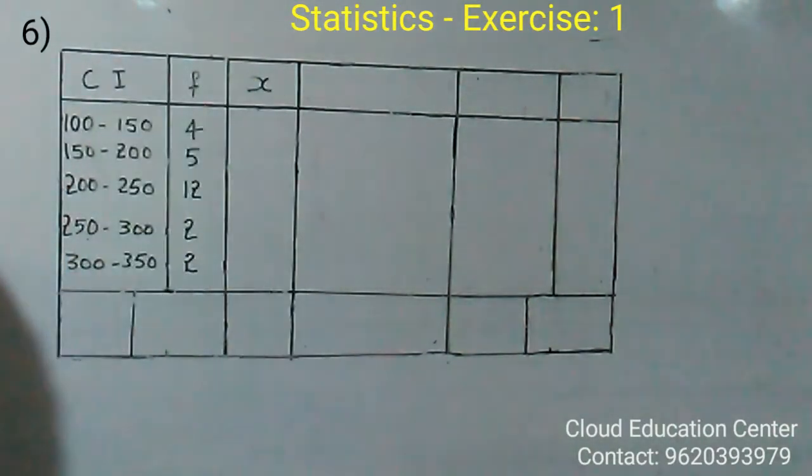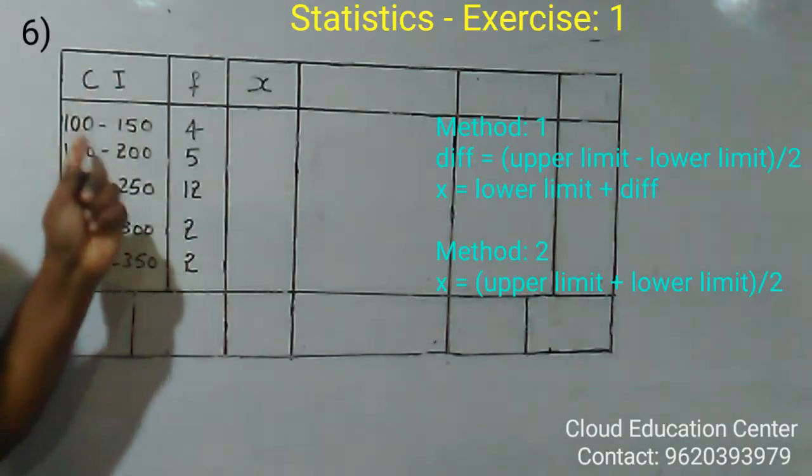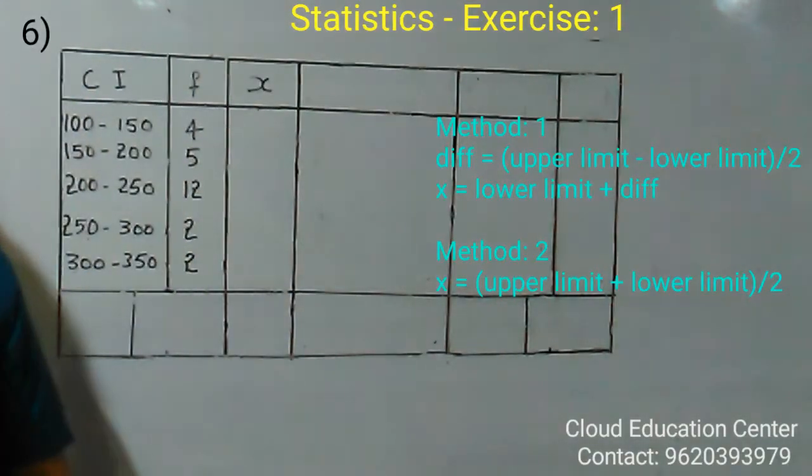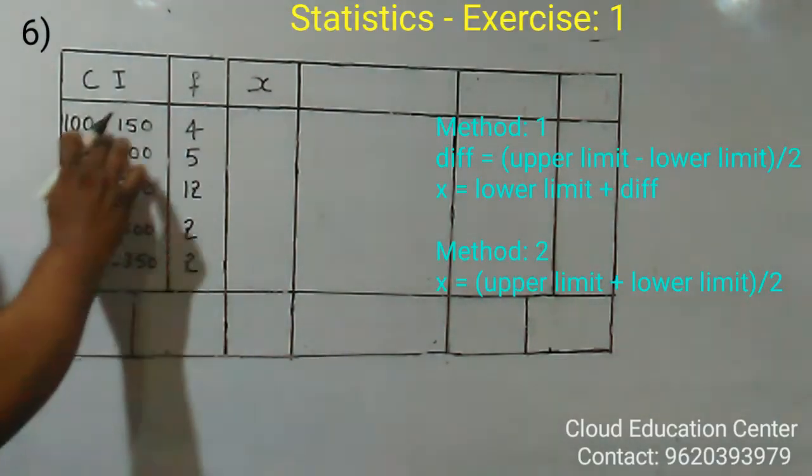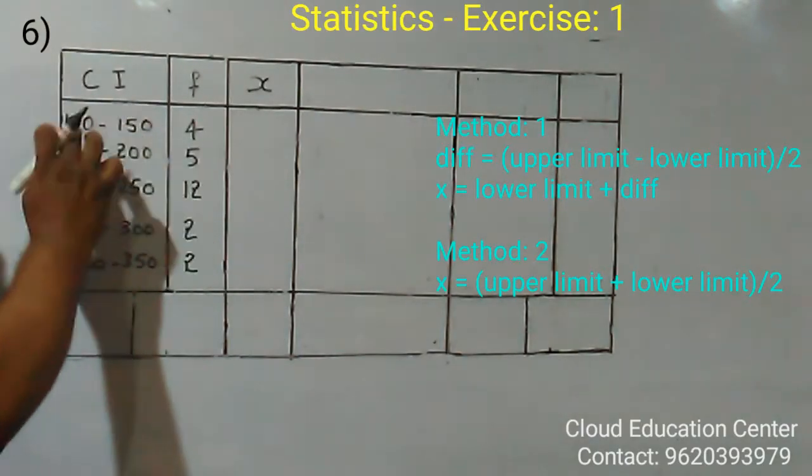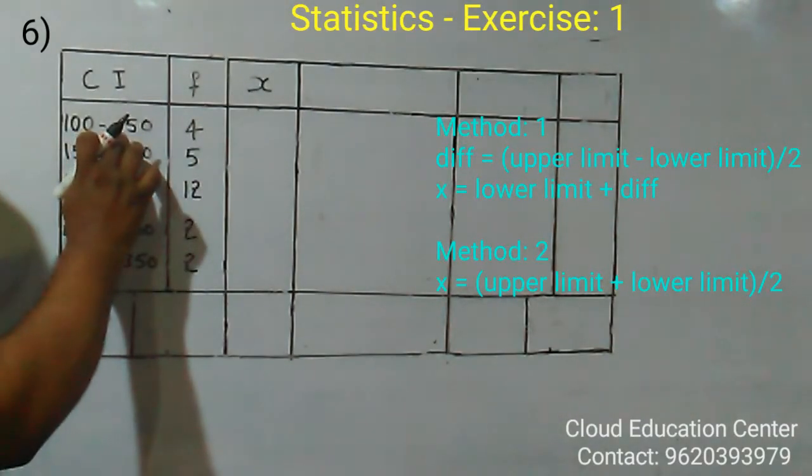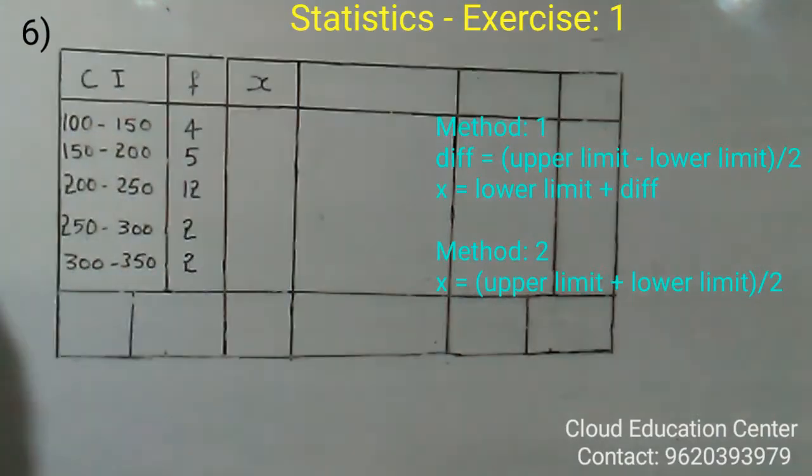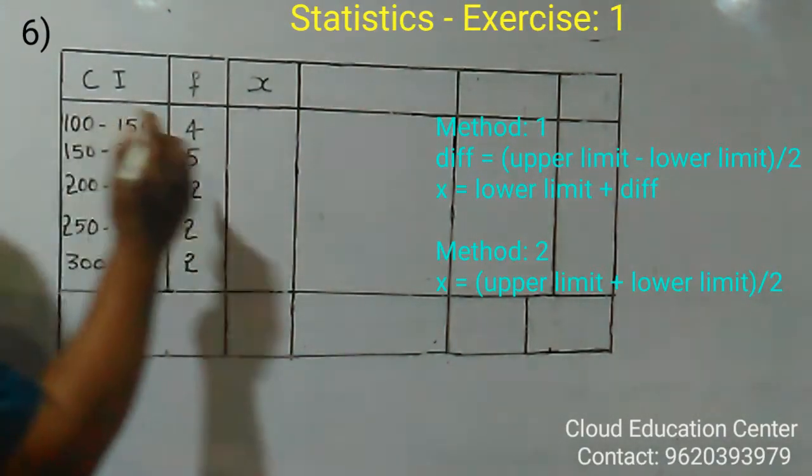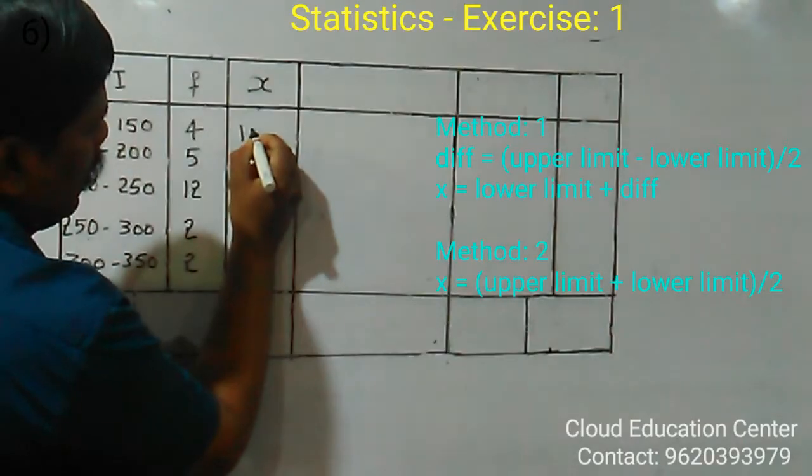First we have to find a class mark. The class interval is given. You have to find class mark, which is nothing but the mid value. As I told before, you check from upper limit to lower limit you subtract it. That is 150 minus 100 is 50. You make that 50 half. So 50 by 2 is 25. You add 25 to the lower limits. 100 plus 25 is 125.